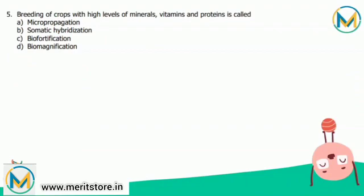The last question: breeding of crops with high levels of minerals, vitamins, and proteins is called? It is called biofortification. Biofortification is the idea of breeding crops to increase their nutritional value. This can be done through conventional selective breeding or genetic engineering. It differs from ordinary fortification because it focuses on making plant foods more nutritious as the plants are growing, rather than adding nutrients during processing. The correct answer is option C — biofortification.